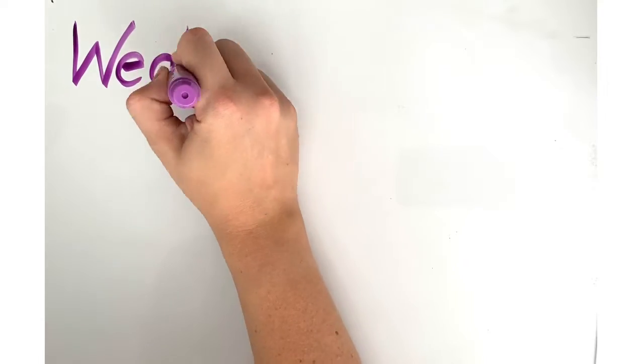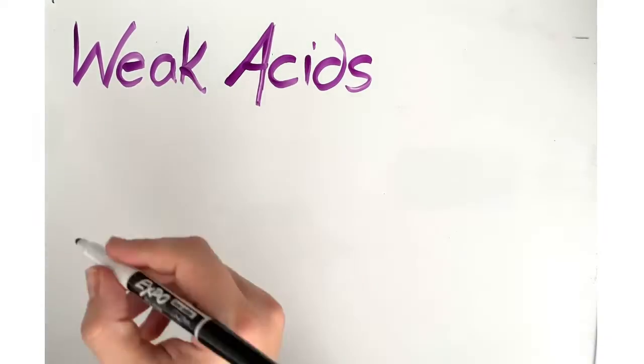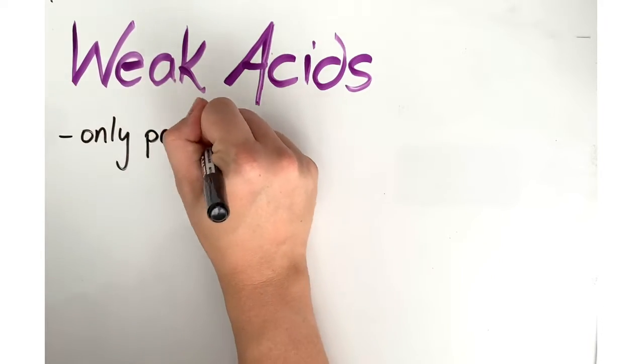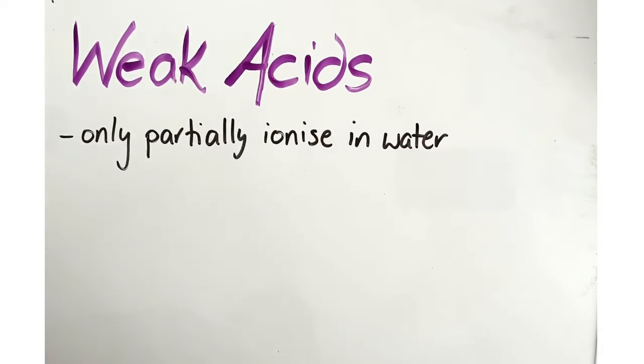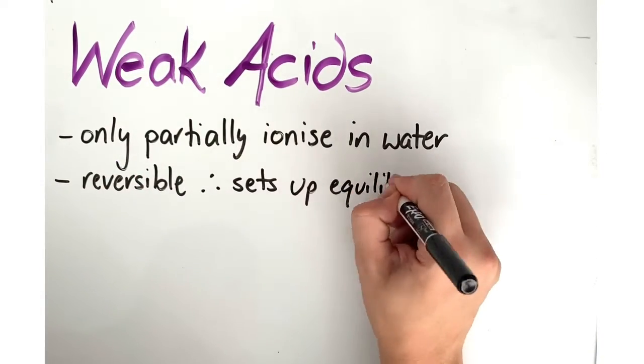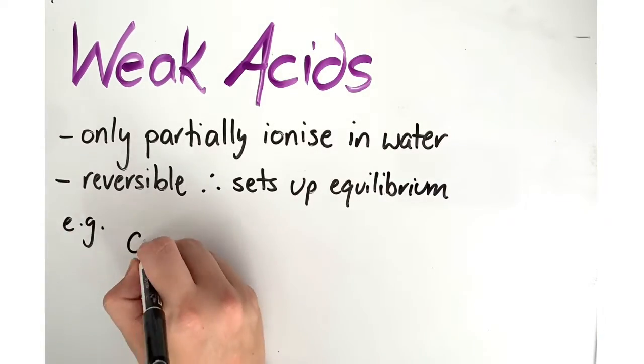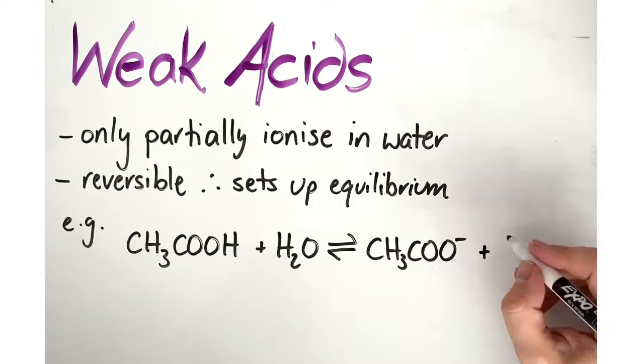Now let's look at weak acids. A weak acid is one which only partially ionizes when it is dissolved in water. For example, ethanoic acid reacts with water to produce hydronium ions and ethanoate ions. Since the reaction doesn't go to completion and is reversible, it sets up an equilibrium.